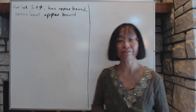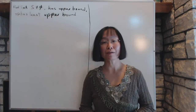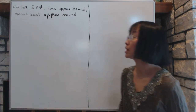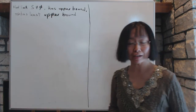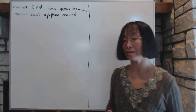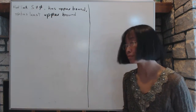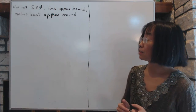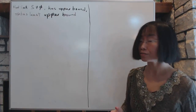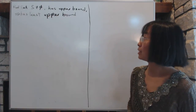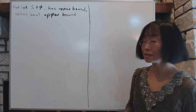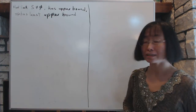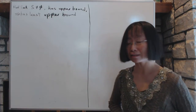Section 2.7 is about least upper bounds of real numbers. Suppose you have a non-empty set of real numbers that has an upper bound. Then we can show that it has a least upper bound.